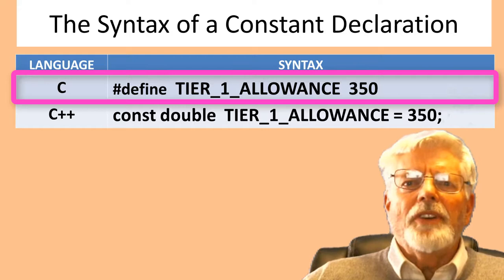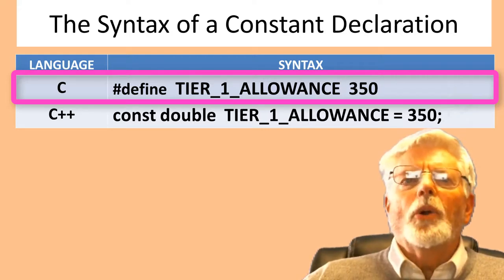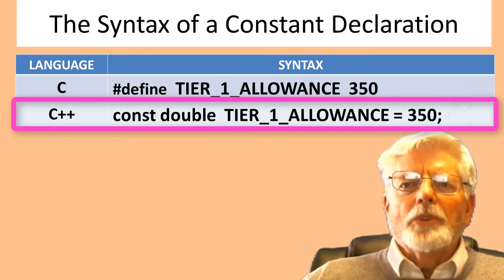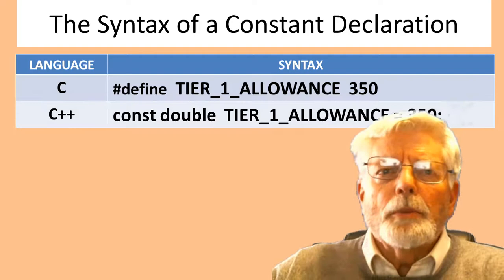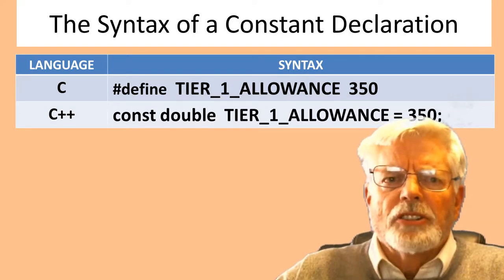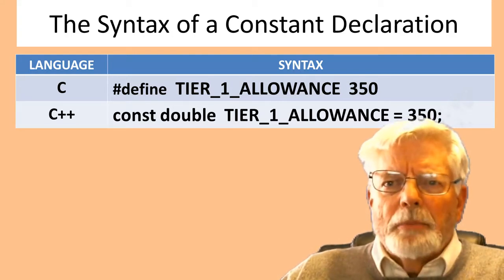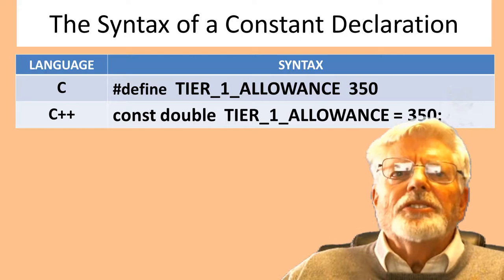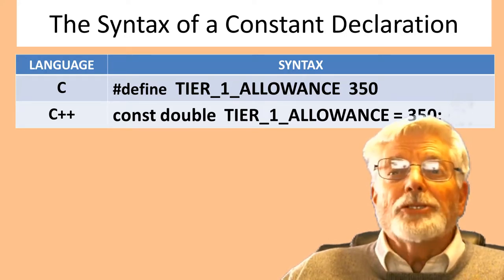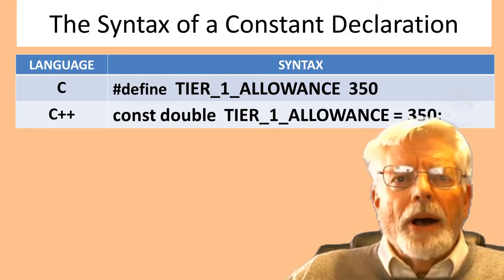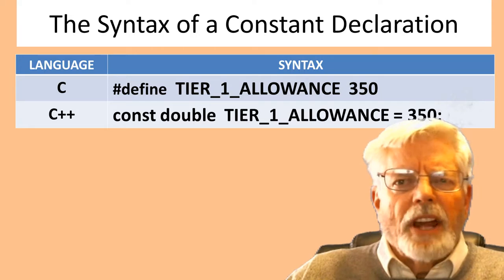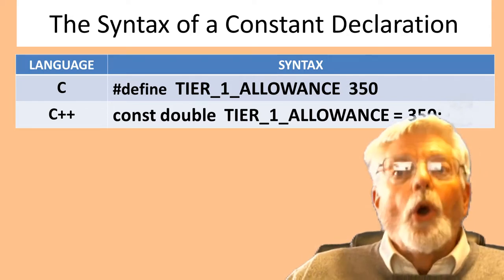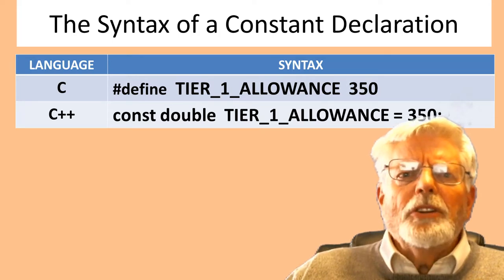The underscore character is used to separate English words because spaces are not permitted in a name. The syntax for declaring a constant is different between C and C++. In C, #define does not use the equal sign or semicolon at the end of the line. In C++, the const keyword is followed by a data type, a name, the equal sign, a value, and ends with a semicolon. Constants in C++ have a data type such as double. The #define in C does a find-and-replace before compilation — this is why we don't want a semicolon in a #define statement, or it would be added into the code unintentionally.